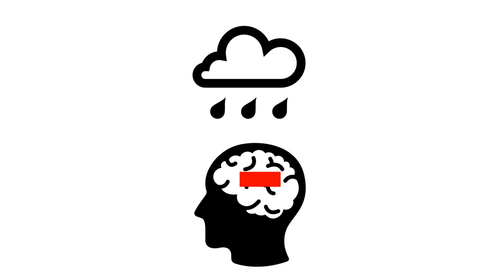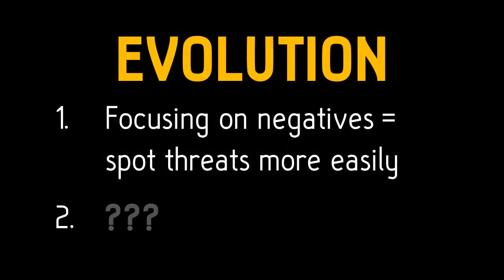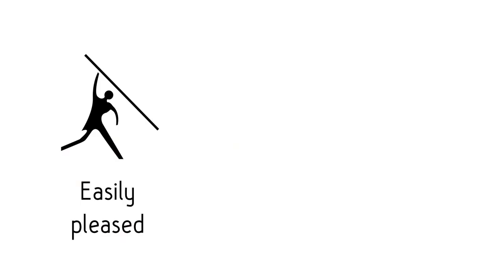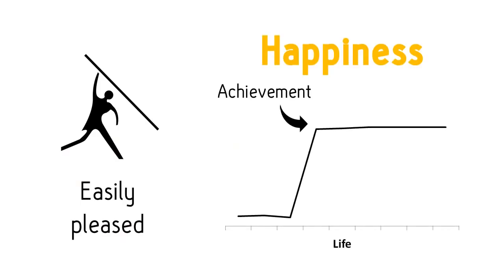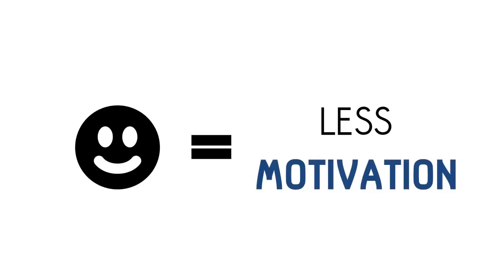However, if you continue looking from an evolutionary perspective, you can find an even bigger reason for why happiness is so hard to achieve. To show you, let's imagine you were a caveman who was easily pleased. All it took was one achievement and you were happy for the rest of your life. You wouldn't be very motivated to make any more progress, right?